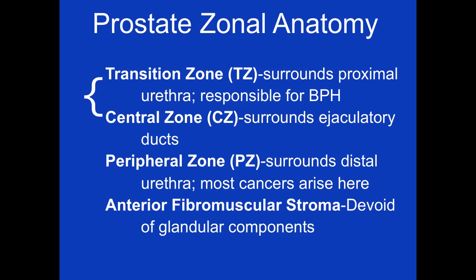Brief summary of the zonal anatomy: The transition zone surrounds the proximal urethra and is responsible for benign prostatic hyperplasia. The central zone surrounds the ejaculatory ducts, and together with the transition zone, in radiologist literature, it is considered to be the central gland. The peripheral zone surrounds the distal urethra and is the area where most cancers arise. And finally, the anterior fibromuscular stroma is essentially devoid of any glandular components. And there you have prostate zonal anatomy in about five minutes.